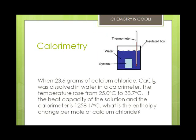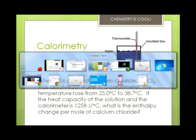A calorimeter is a device used to measure the heat absorbed or evolved during a physical or chemical change. The heat absorbed by the calorimeter and its contents is the negative of the heat of reaction. 23.6 grams of calcium chloride, CaCl2, is dissolved in water in a calorimeter. The temperature rose from 25 to 38.7 degrees Celsius, and the heat capacity of the solution and calorimeter is 1258 joules per degree Celsius. What's the enthalpy change per mole of calcium chloride?